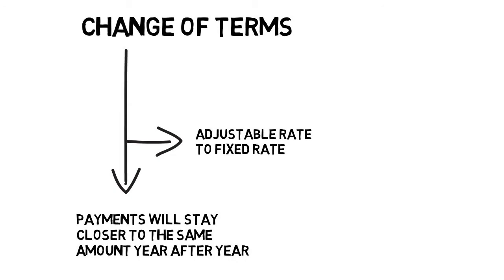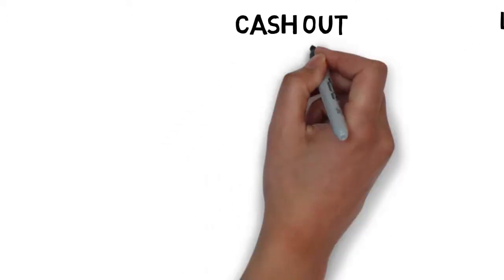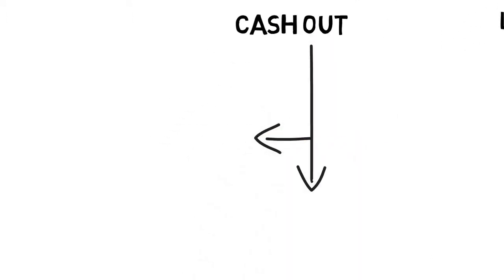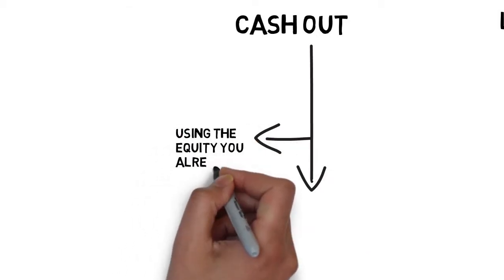Refinancing your home does not always have to be for the benefit of changing the terms of your loan. Refinancing to receive cash out by using the equity in your property is a major benefit. With enough equity in your home, you can take out cash to be used for unexpected expenses.